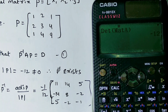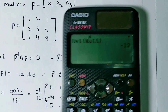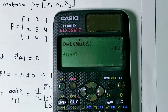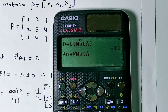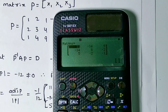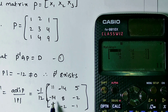Now we find P⁻¹. The formula for P⁻¹ is adjoint(P) divided by det(P). Using the calculator, we find the adjoint matrix (det(P) × P⁻¹) which gives: [11, −14, 5; −14, 8, −2; 5, −2, −1]. This is the P⁻¹ matrix.